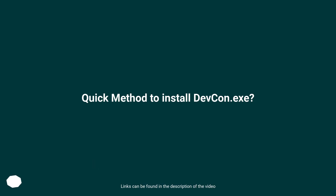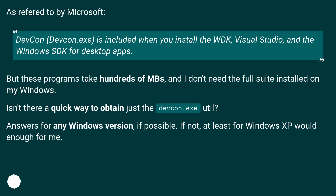Quick method to install devcon.exe. As referred to by Microsoft, devcon.exe is included when you install the WDK, Visual Studio, and the Windows SDK for desktop apps. But these programs take hundreds of MBs, and I don't need the full suite installed on my Windows. Isn't there a quick way to obtain just the devcon.exe utility? Answers for any Windows version if possible; if not, at least for Windows XP would be enough for me.